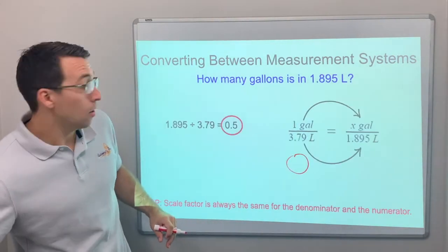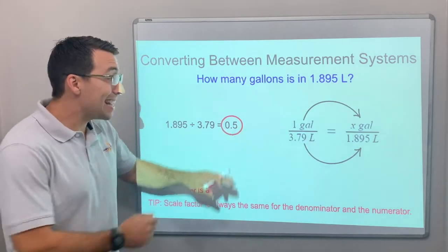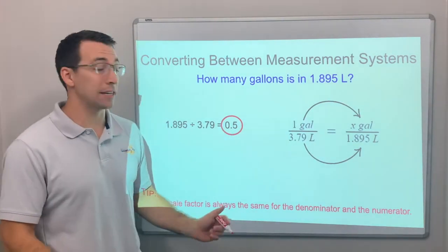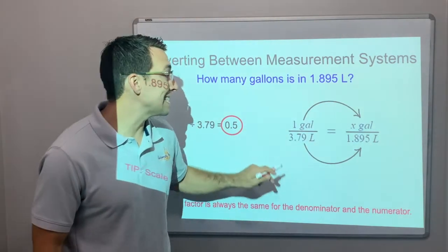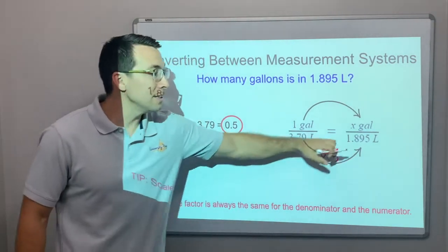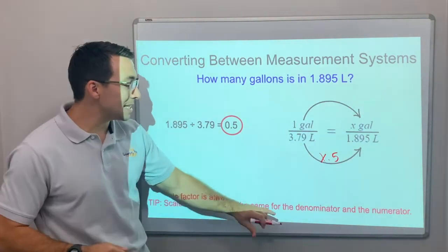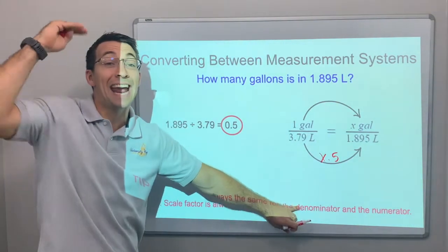What does that tell us? That tells us what the scale factor is. So 3.79 times 0.5 is 1.895. And we know the scale factor is always the same for the denominator and the numerator.